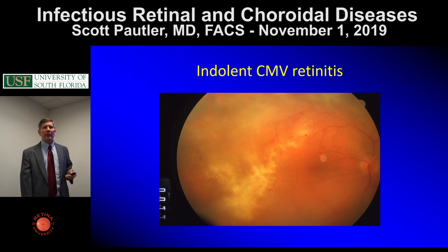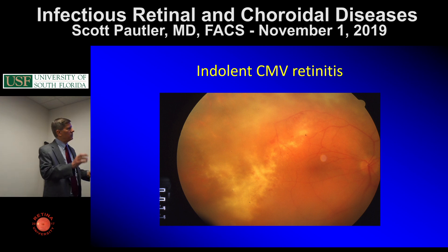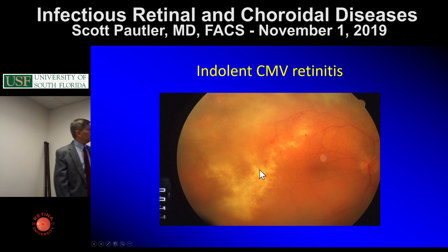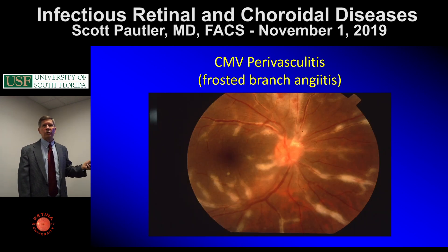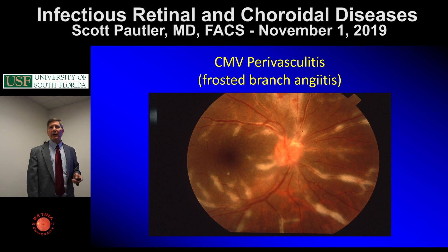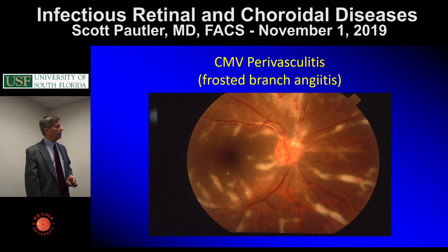Someone with a slightly better immune system might present with an indolent CMV retinitis, where the retina has been damaged and there is a leading granular edge that slowly creeps. It's important to identify this active border because it needs to be treated. In young healthy people, you'll get a frosted branch angiitis pattern. Sometimes this frosted branch pattern appears with indolent or fulminant forms as well — they're not always exclusive.